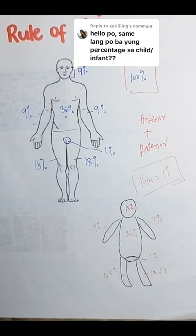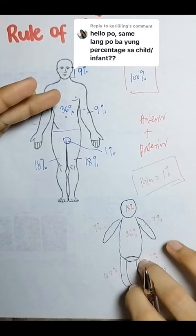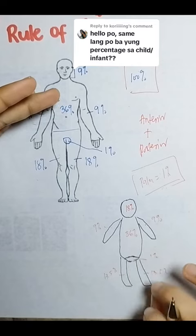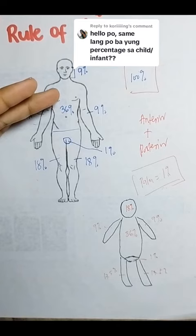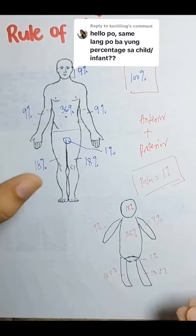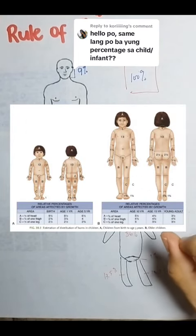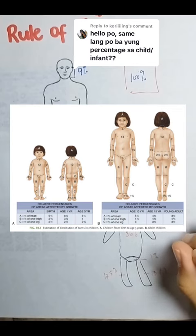Another thing pala — pag nag-search kayo online, may makikita kayong iba-iba ang mga percentage na binibigay dun sa infant and children, lalo na kasi sa age. And according sa Saunders NCLEX-RN review, or the Saunders Comprehensive Review for NCLEX-RN, in pediatric patients, the extent of the burn is expressed as a percentage of the total body surface area. Usually yung ginagamit is age-related charts — here I'll be posting a picture of that age-related chart. Mas detailed, mas complicated nga lang, pero mas accurate. Again, this is from the Saunders Comprehensive NCLEX-RN review.